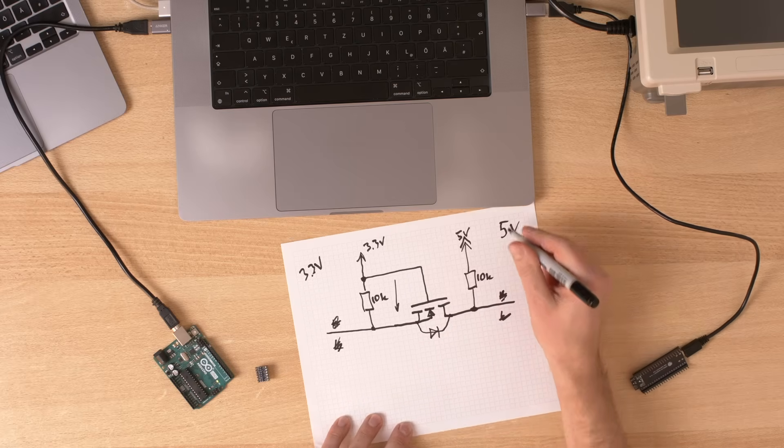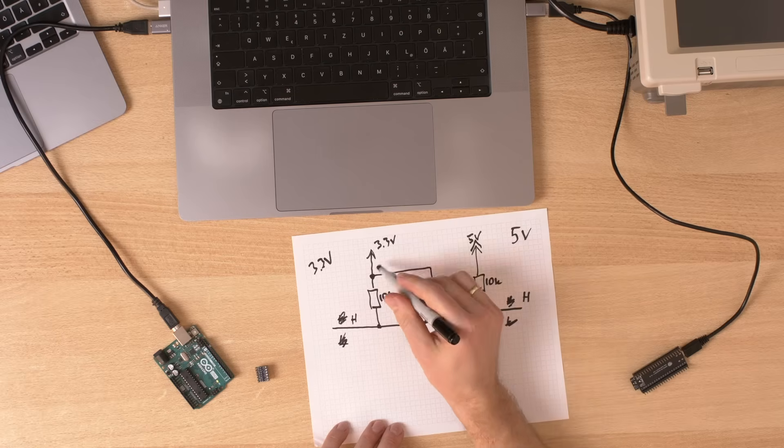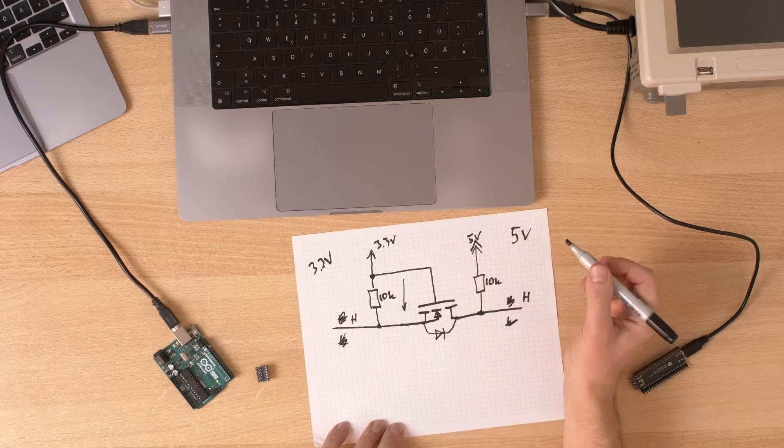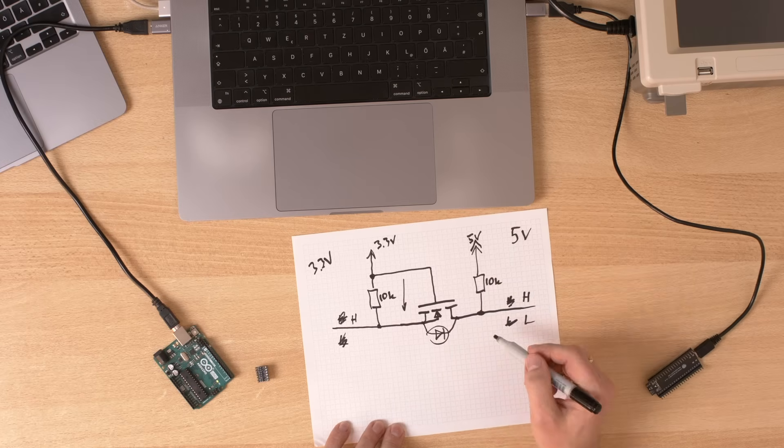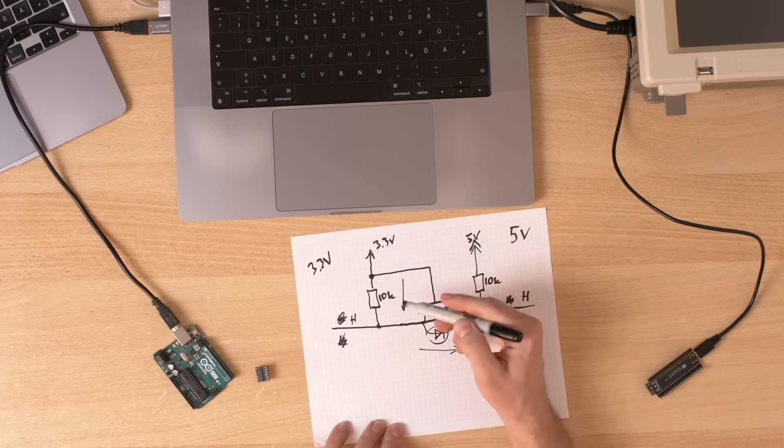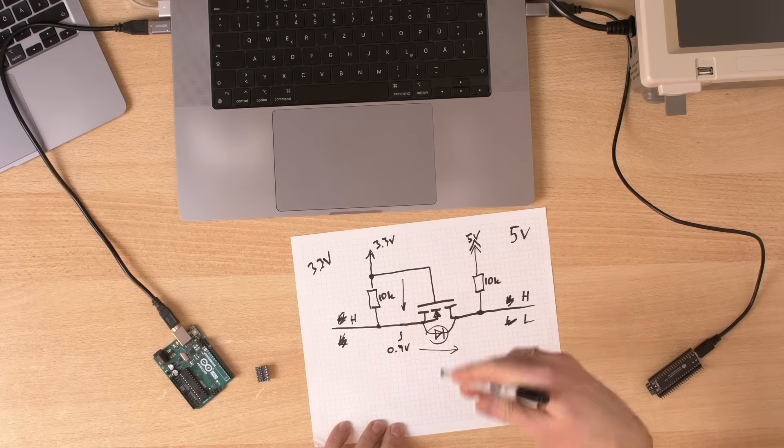In the opposite direction, if the 5 volt system outputs a high signal here, then there is this pull up resistor that pulls this side also up. And if we output a low signal here, then this diode conducts. And we get around 0.7 volts here. And this means that this transistor turns on. And then this is low again. So it works in both ways. It's not the fastest circuit. So if you have very high frequencies, you might run into some issues.